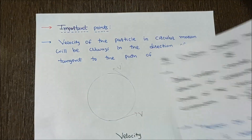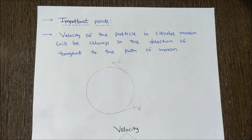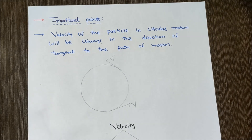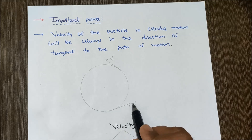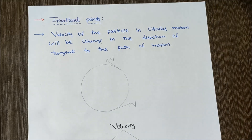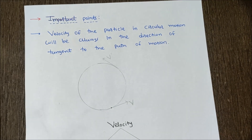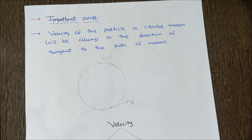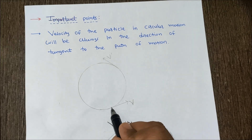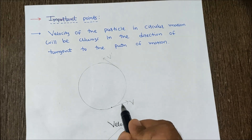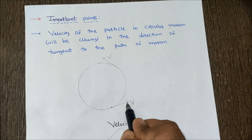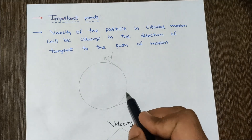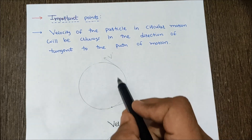Before deriving the equation for centripetal acceleration, we remember the following important points. First point: the velocity of the particle in circular motion will always be in the direction of the tangent to the path of motion. If an object is moving on a circular path and we want to find the direction of velocity at a point, we draw a tangent at that point — this tangent shows the direction of velocity.